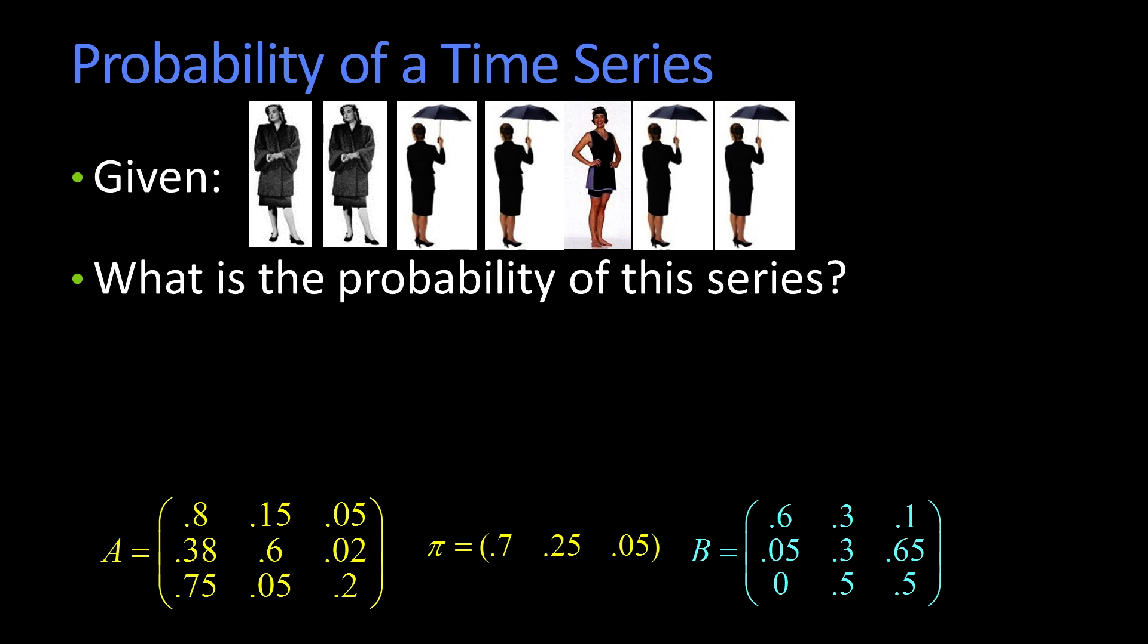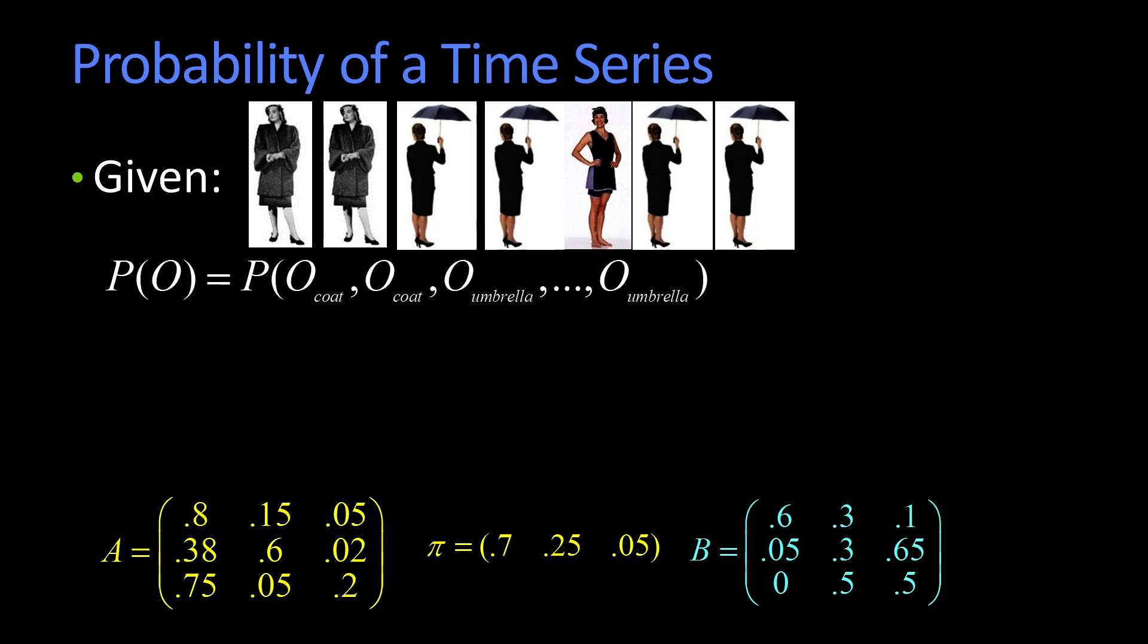Well, we could evaluate that if you give us everything. So here I've just written it out as P of O is this, all the sequence of all the observations. And I know the way to compute that, and we'll get more of the details later, is I could say, well, if you told me the sequence of states, then I could tell you the probability of a given observation. And if I multiplied that by the probability of that sequence, I could get the whole thing.